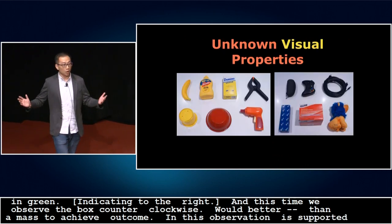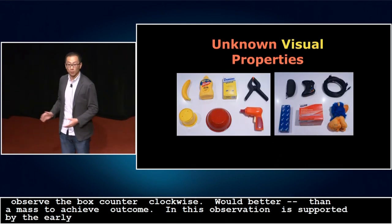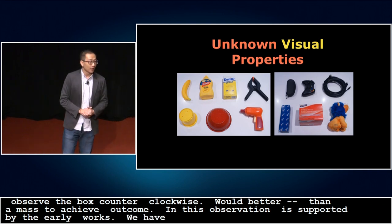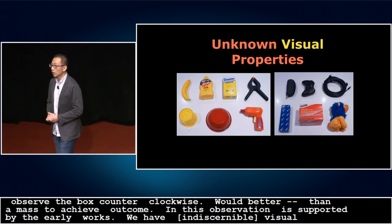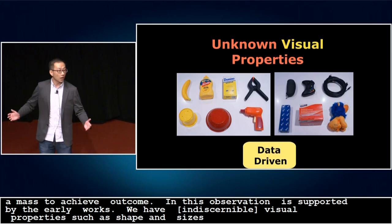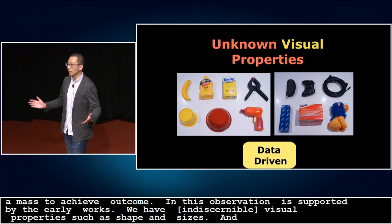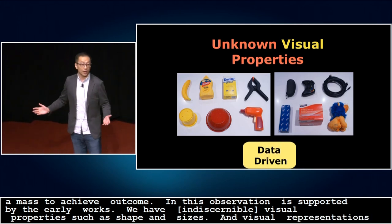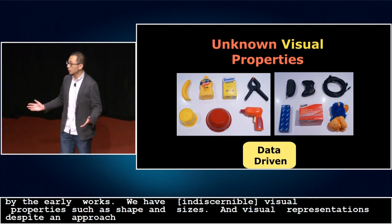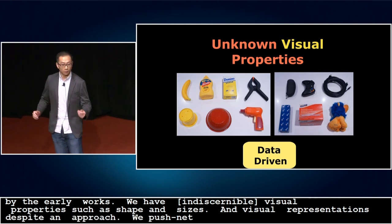This is not the complete story — we also have to deal with unknown visual properties such as shapes and sizes. The recent success of deep learning in extracting visual representations inspired us to adopt a data-driven approach. To this end, we propose PushNet, a recurrent neural network that embeds history of interaction while estimating the center of mass.